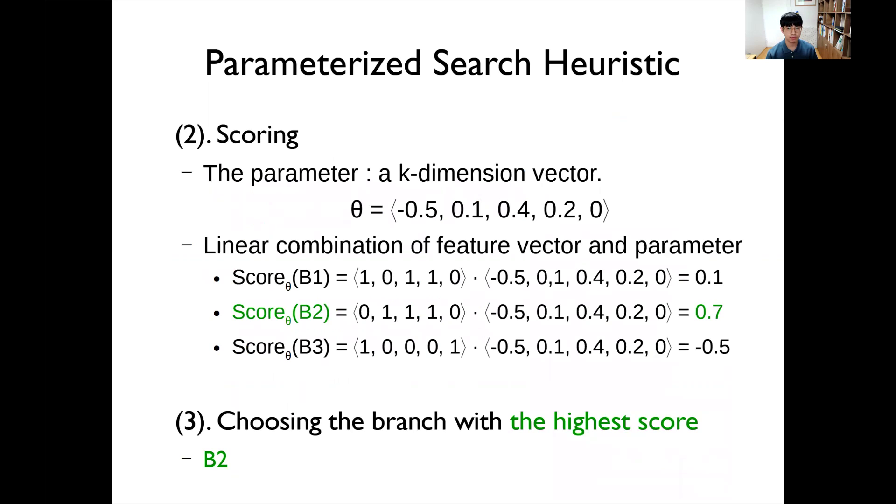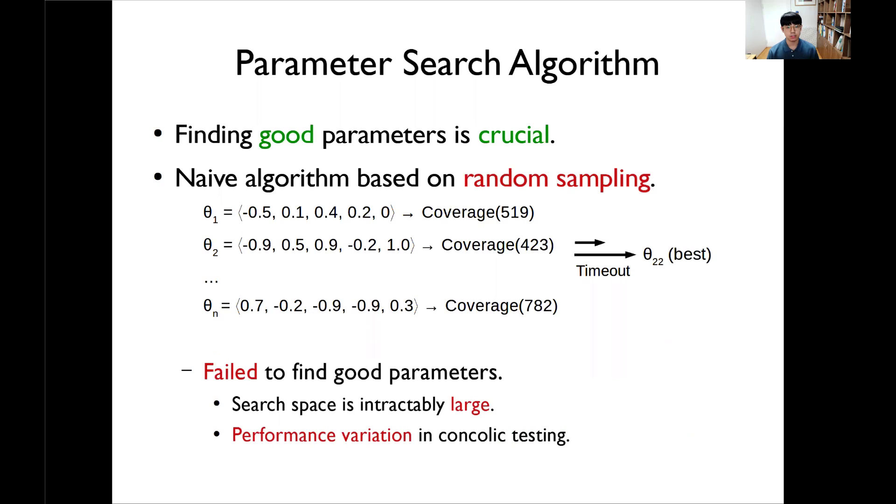After transformation, we can score the branches. For example, suppose that a 5-dimension parameter value is like that, then we can simply score the branches by calculating a linear combination of feature vector and the parameter value theta. And finally, we choose the b2 with the highest score. So the branch selection in our parametric search is completely determined by the value of parameter.